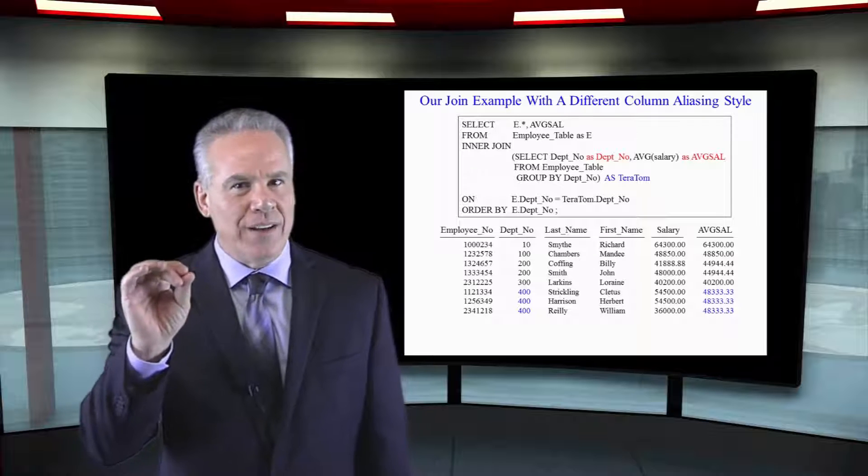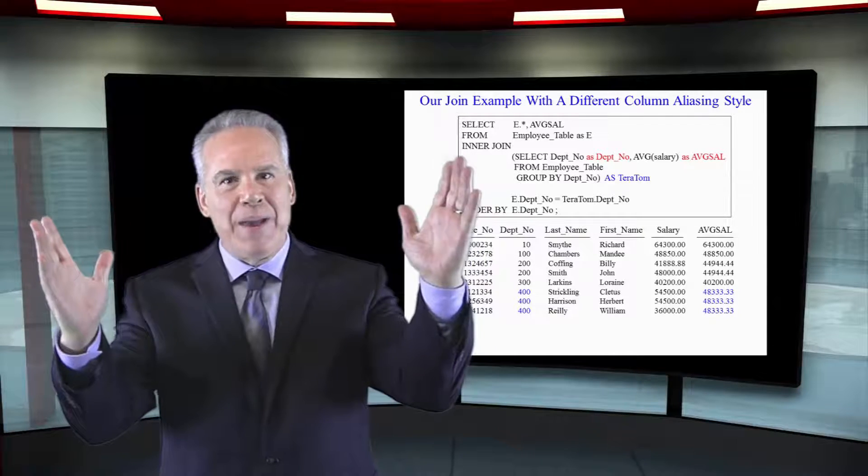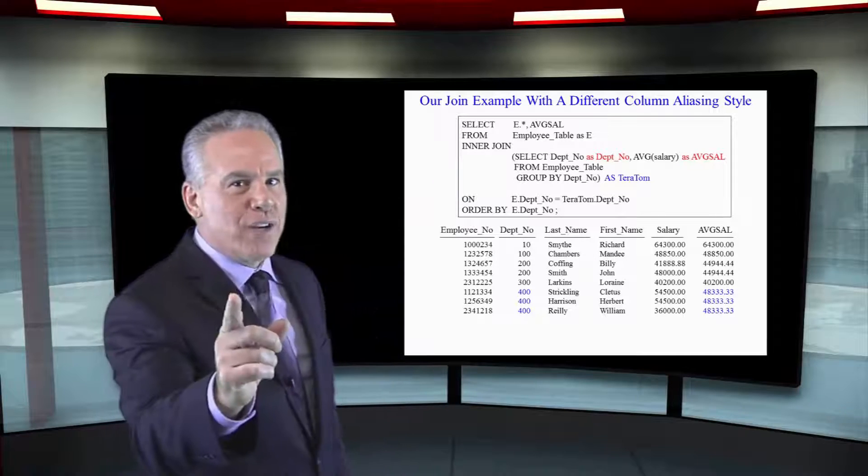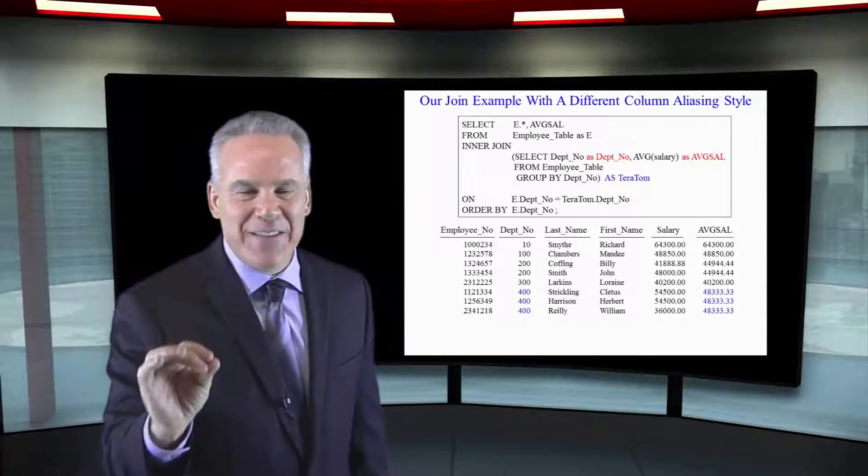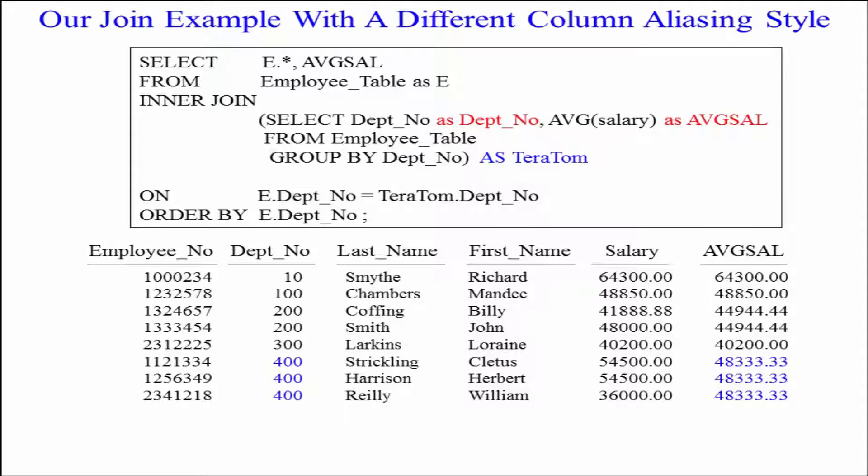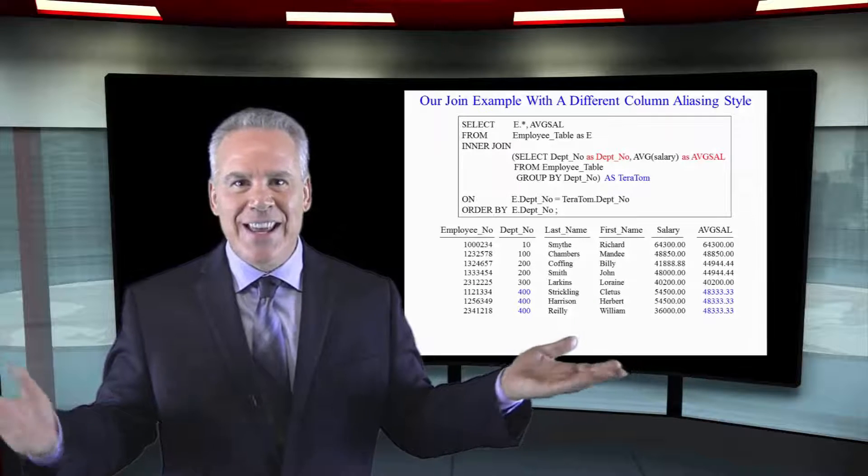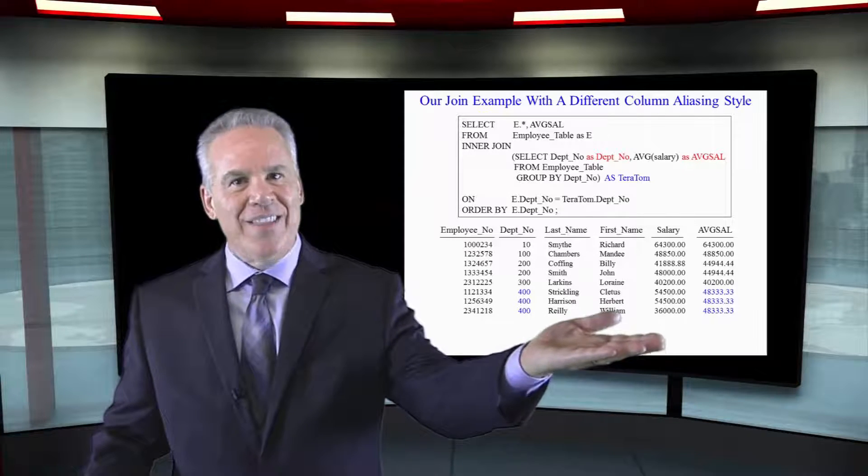You see, every time you create a derived table, you'll call timeout with those parens, and you'll have your select query. Every time you have got to give it a table name. You've got to do that, but you can do some things that are a little different when you're aliasing the columns. And in this case, we call timeout, we have our select query, but we select Depno as Depno. Average salary as AVGSAL, and then we just have to name the derived table. We call it Teratom. We don't have to alias the columns again. This is just a different style that you might like.